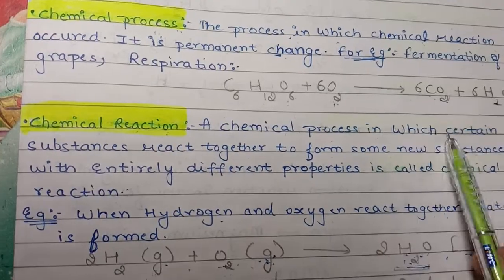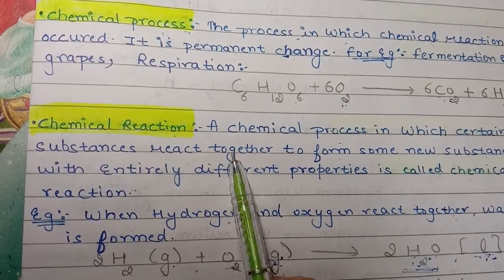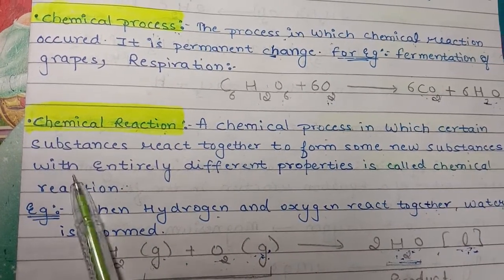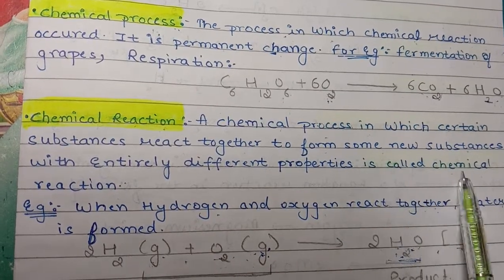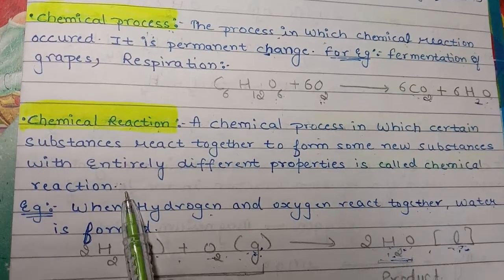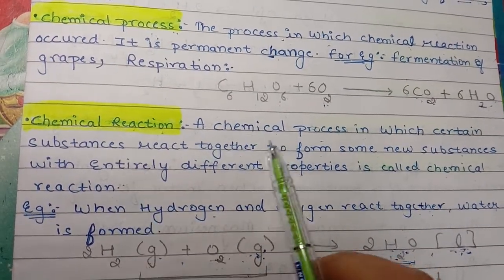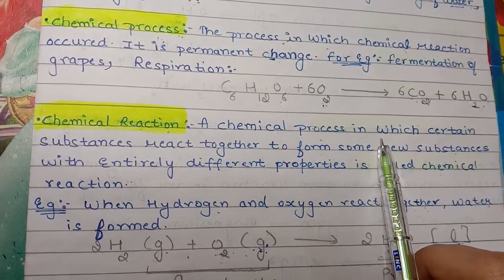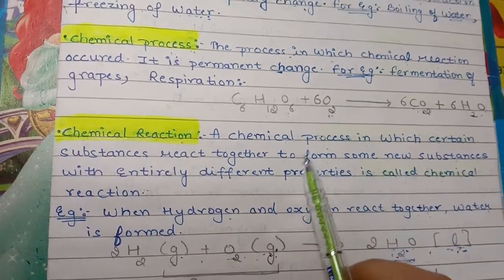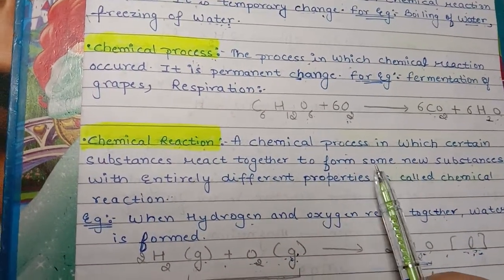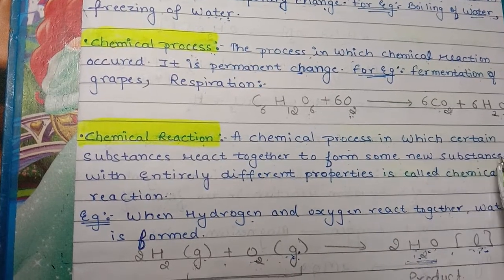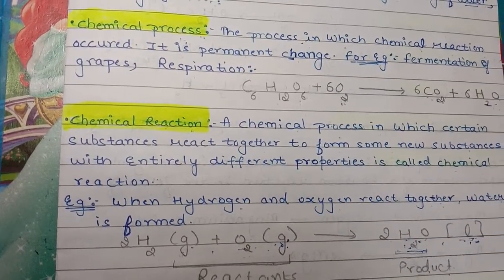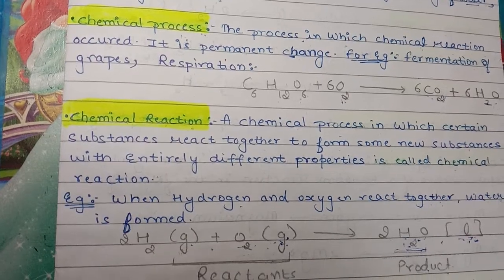The third definition is the chemical reaction. A chemical reaction is a chemical process in which certain substances react together to form some new substances with entirely different properties. The new substances formed are very different from the reactants.